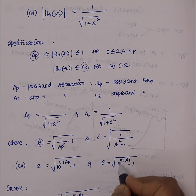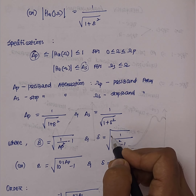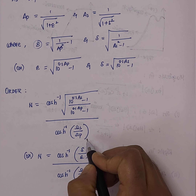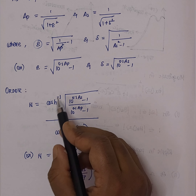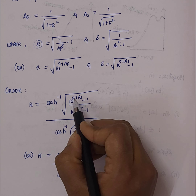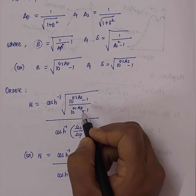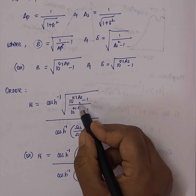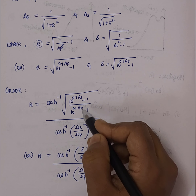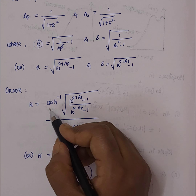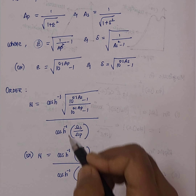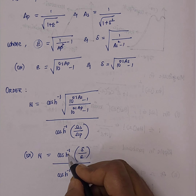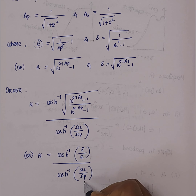In terms of decibel values, we can represent these quantities. To find the order of this type of filter, n is equal to cosh inverse of the square root of (10 to the power 0.1·a_s minus 1) divided by (10 to the power 0.1·a_p minus 1), all divided by cosh inverse of omega_s over omega_p. In the Butterworth and Chebyshev filters, the numerator and denominator bracket values are the same. The order formula in terms of delta and epsilon is: cosh inverse of delta over epsilon, divided by cosh inverse of omega_s over omega_p.